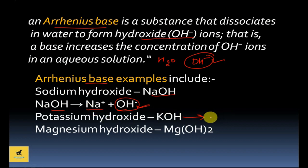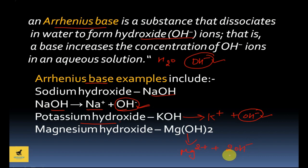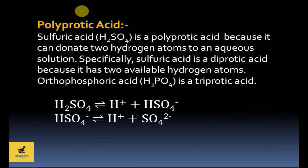Next example is KOH. When you see KOH's reaction in water, it dissociates into K⁺ plus OH⁻. Due to this OH⁻, potassium hydroxide is called an Arrhenius base. Another example is Mg(OH)₂ — in water, its reaction gives Mg²⁺ plus 2OH⁻. Due to this OH⁻, magnesium hydroxide is also called an Arrhenius base.